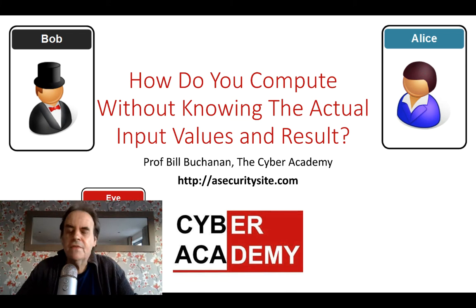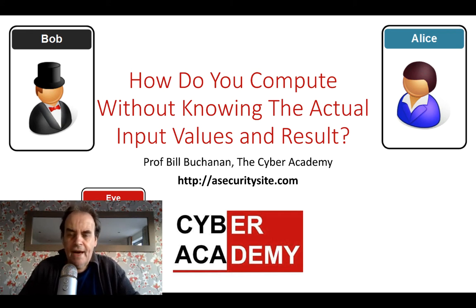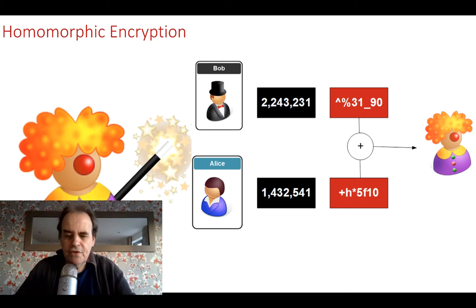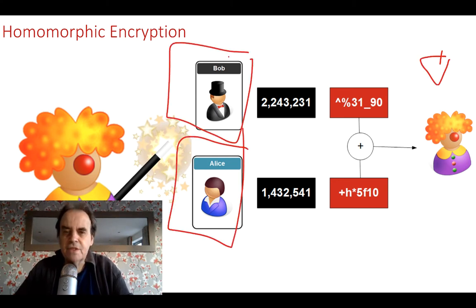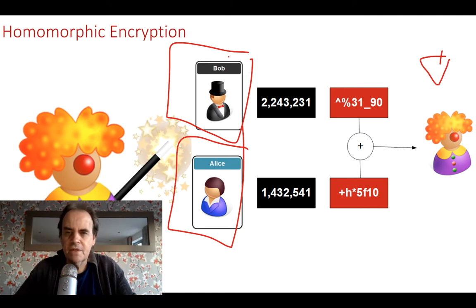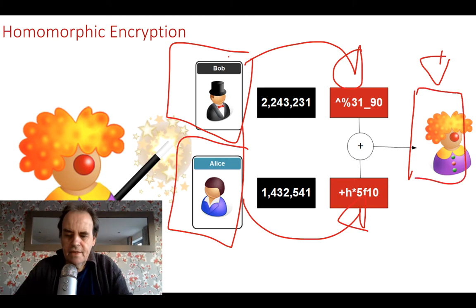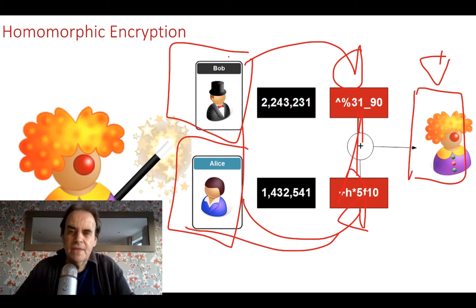How do we compute something without knowing the input values, any of the intermediate results, or the final result? For this we're going to look at homomorphic encryption. With homomorphic encryption, we have a processor — in this case Eve — who takes values from Bob and Alice. We want to add their salaries together and find the result, but without Eve knowing what the result is. Bob encrypts a value, Alice encrypts a value, Eve computes the result, and it's not possible to see what the actual input values were.